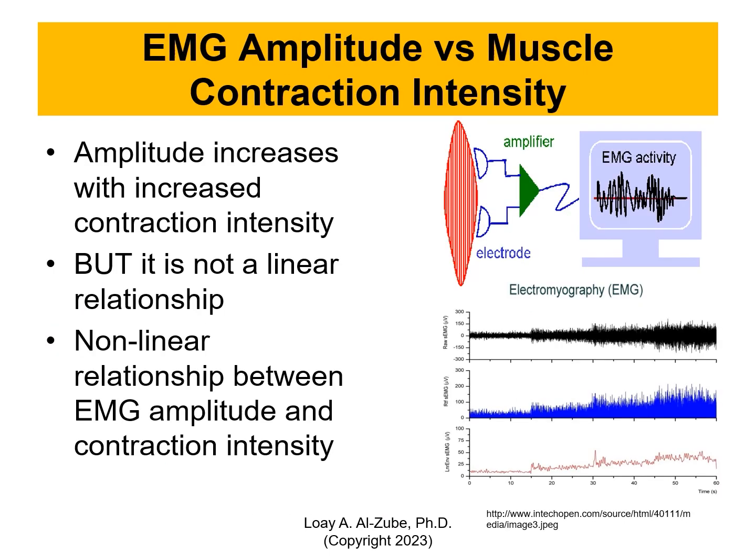What can we get out from an EMG? We have EMG amplitude for muscle contraction intensity. There is coupling between the action potential and the muscle contraction — amplitude increases with increased contraction intensity — but it's not a linear relationship. It's non-linear, so I can't say that if I increase it by 10% the amplitude will increase by 10%.